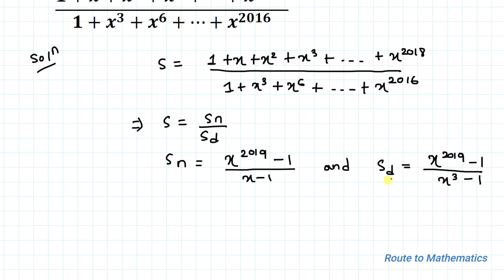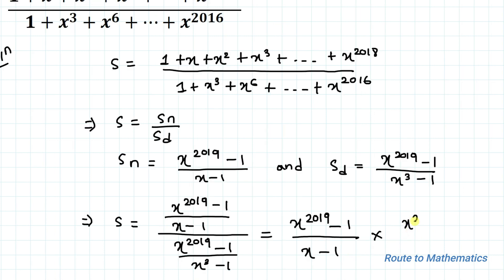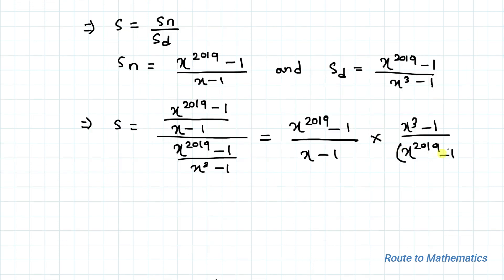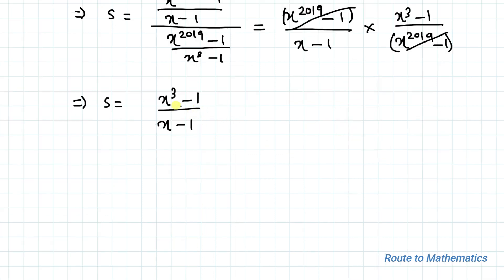Now putting these values together: S = [(x^2019 - 1) / (x - 1)] ÷ [(x^2019 - 1) / (x³ - 1)], which equals (x^2019 - 1) / (x - 1) × (x³ - 1) / (x^2019 - 1). The (x^2019 - 1) terms cancel out, giving us S = (x³ - 1) / (x - 1).